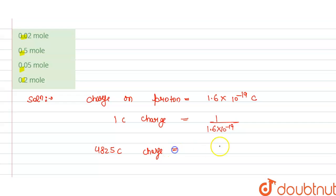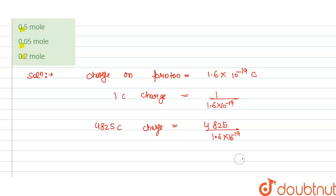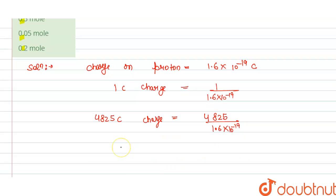is equals to 4825 coulombs divided by 1.6 into 10 power minus 19. So from this we